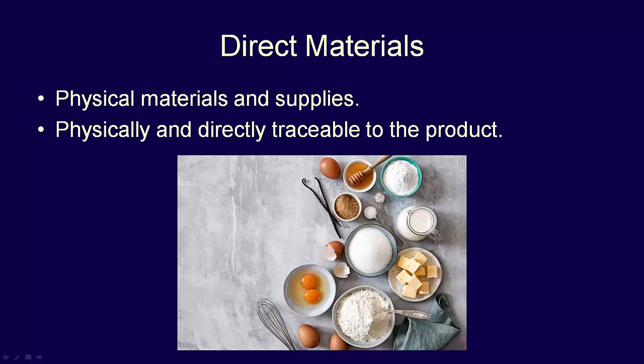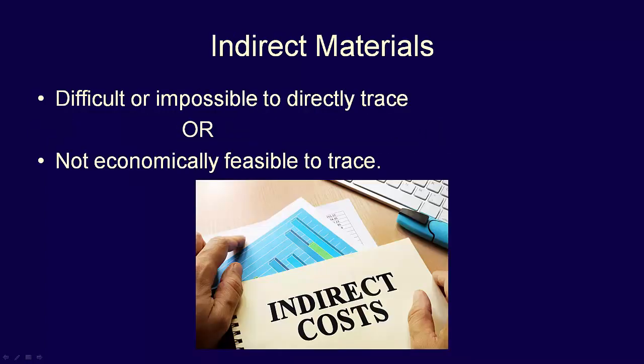Are all raw materials used in the manufacturing process direct materials? No. Some raw materials are indirect materials, which are raw materials that can't be easily associated with the finished product. Indirect materials are indirect for one of two reasons. Sometimes they're just difficult to trace to the individual product — like the butter we use to grease a cake tin before we put the batter in.